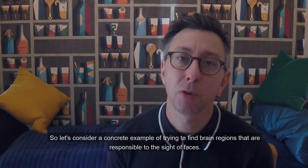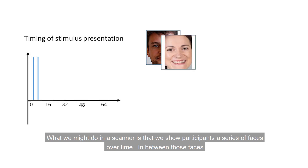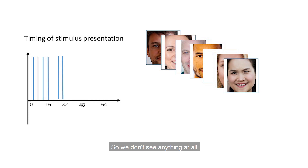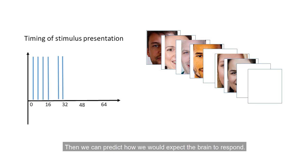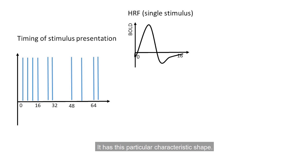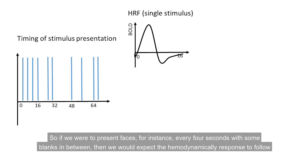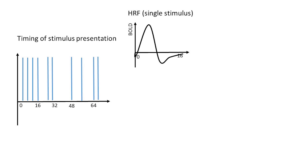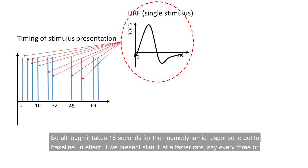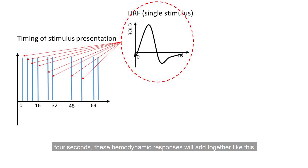Let's consider a concrete example of trying to find brain regions that are responsive to the sight of faces. In our fMRI scanner we show participants a series of faces over time, with blank stimuli in between where they don't see anything at all. We can predict how we would expect the brain to respond, because we know what a typical hemodynamic response looks like — it has this particular characteristic shape. So if we present faces every four seconds with some blanks in between, we would expect the hemodynamic response to follow that particular pattern. And although it takes around 16 seconds for the hemodynamic response to return to baseline, if we present stimuli at a faster rate — say every three or four seconds — these hemodynamic responses will add together.